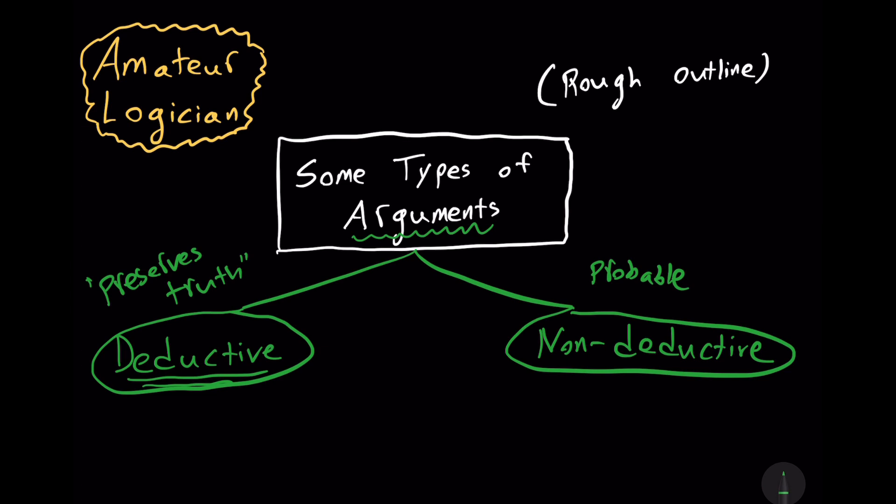But in non-deductive arguments, you will not run into a contradiction just by denying the conclusion. It may be improbable, but it will not be something that runs into a literal, bold contradiction.